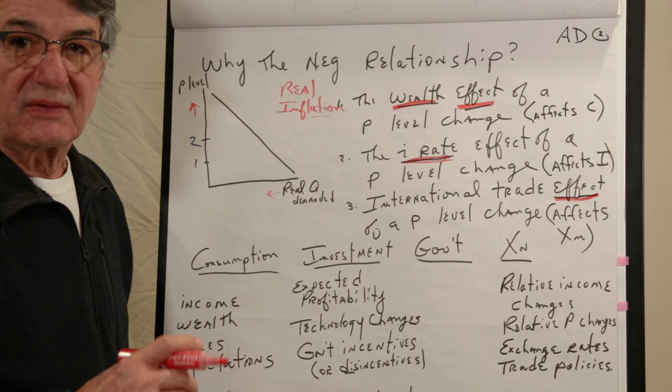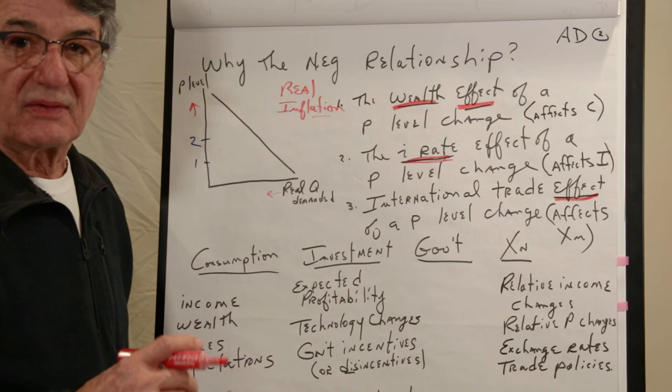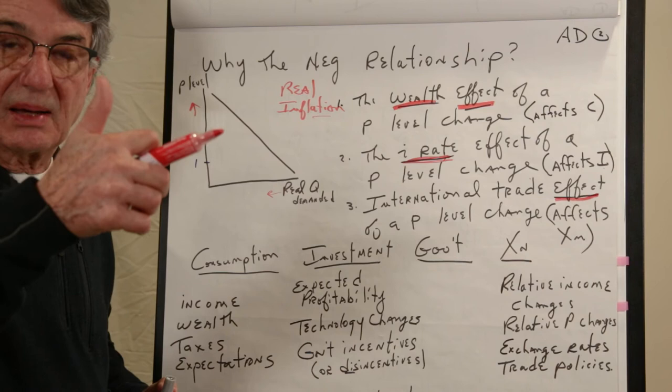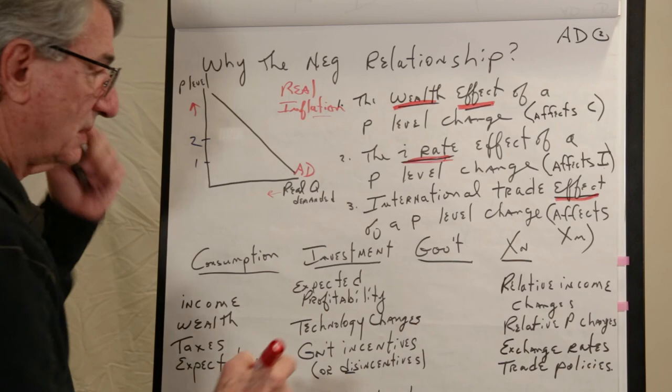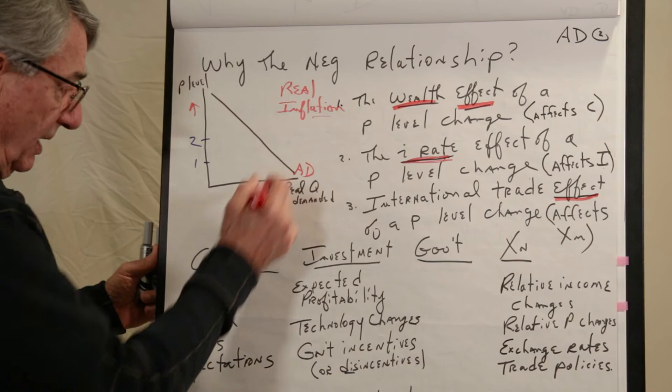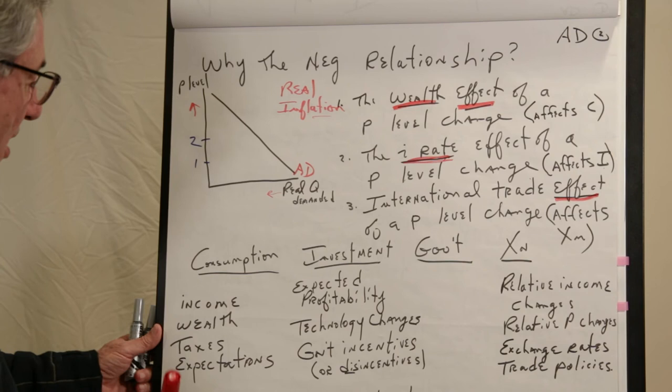And the third is the international trade effect. This assumes that if the price level in the United States is going up, price levels around the world are not necessarily going up. Those are held constant. So if the U.S. price level goes up, people will stop buying as much U.S. goods and buy more from the foreign country. So that explains why the U.S. aggregate demand, when the price level goes up, people shift out of U.S. goods and into foreign goods. So those are the three reasons why there's a negative relationship between price level and real aggregate quantity demanded.